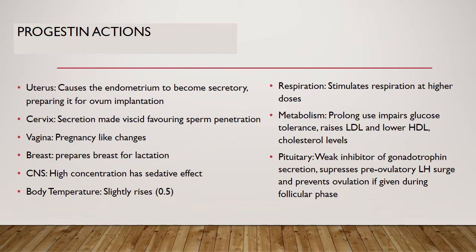Under the influence of progesterone, mitotic activity in the breast epithelium is very low in the follicular phase and then peaks in the luteal phase. During a normal menstrual cycle, the increase in basal body temperature of about 0.5 degrees Celsius mid-cycle correlates with ovulation. Progesterone also increases the ventilatory response of the respiratory centre to CO2 and leads to reduced arterial alveolar pCO2 in the luteal phase and during pregnancy. Progesterone may also have a depressive and hypnotic effect in the CNS, possibly accounting for drowsiness on hormone administration.